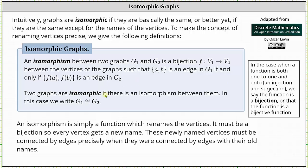Two graphs are isomorphic if there is an isomorphism between them. In this case, you write G1 is isomorphic to G2. This symbol is also used for congruence in geometry. An isomorphism is simply a function which renames the vertices. It must be a bijection so every vertex gets a new name. These newly named vertices must be connected by edges precisely when they are connected by edges with their old names.